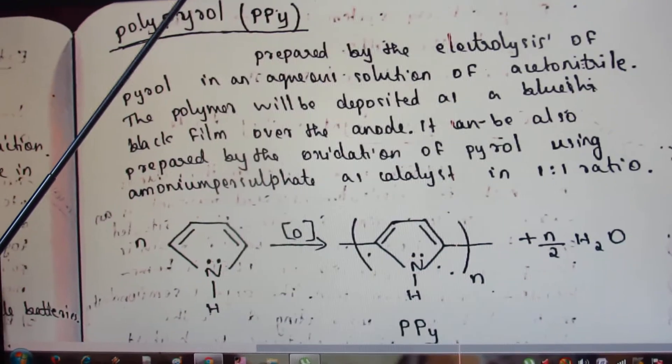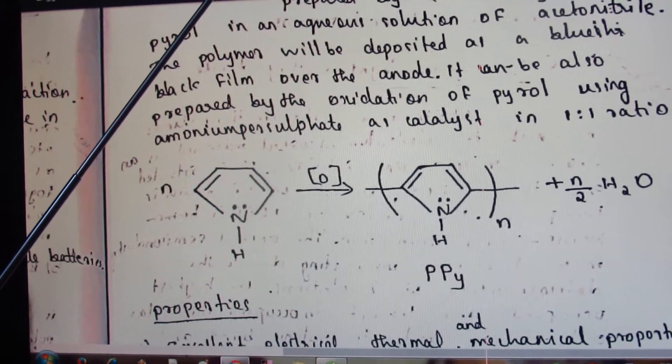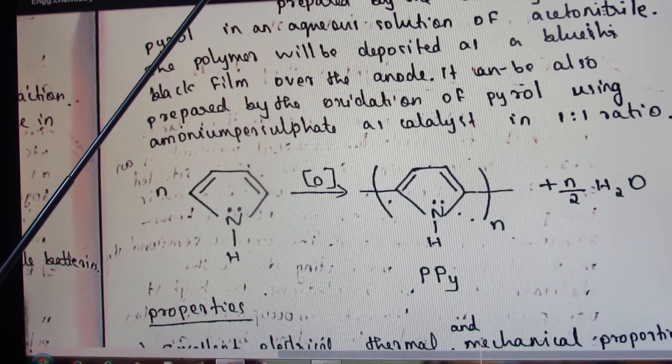In conducting polymers, we already discussed two to three examples: polyacetylene, polyaniline, and polypyrrole.